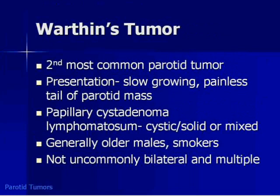The other thing on the differential is Warthen's tumor, the second most common parotid tumor. It too is slow-growing, but is generally seen in the tail of the parotid gland. This tumor is a papillary cyst adenoma lymphomatosum, meaning it has papillary elements that excrete fluids. These tumors can be solid, cystic, or a combined cystic-solid lesion. Unlike our original case — a woman who doesn't smoke — Warthen's tumors are seen in older males and smokers, so that history should tip it off. Warthen's tumors are not uncommonly bilateral or multiple.